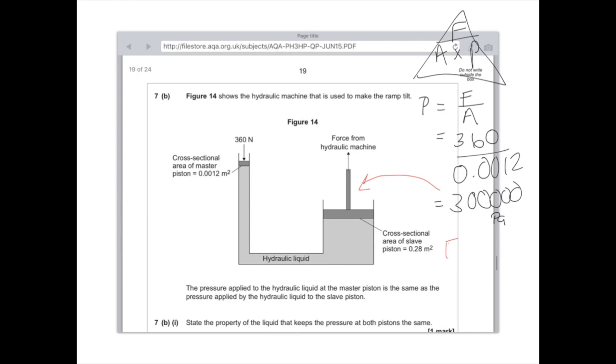So, force equals, again using the equation triangle above, area times pressure. Area, given in the question, is 0.28. You want to multiply it by the number we just calculated. And that will give you an answer, which is 84,000 Newtons.